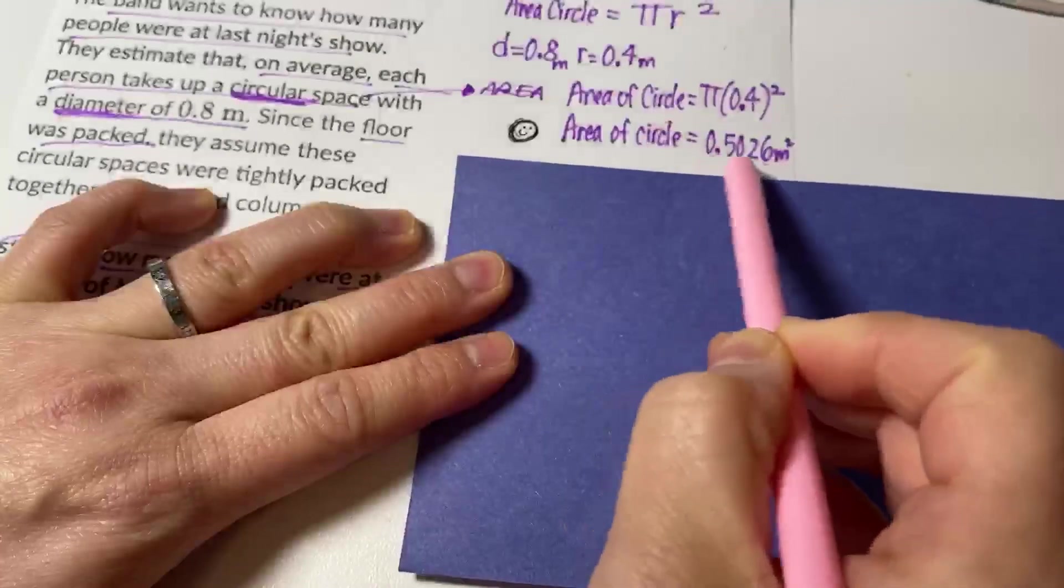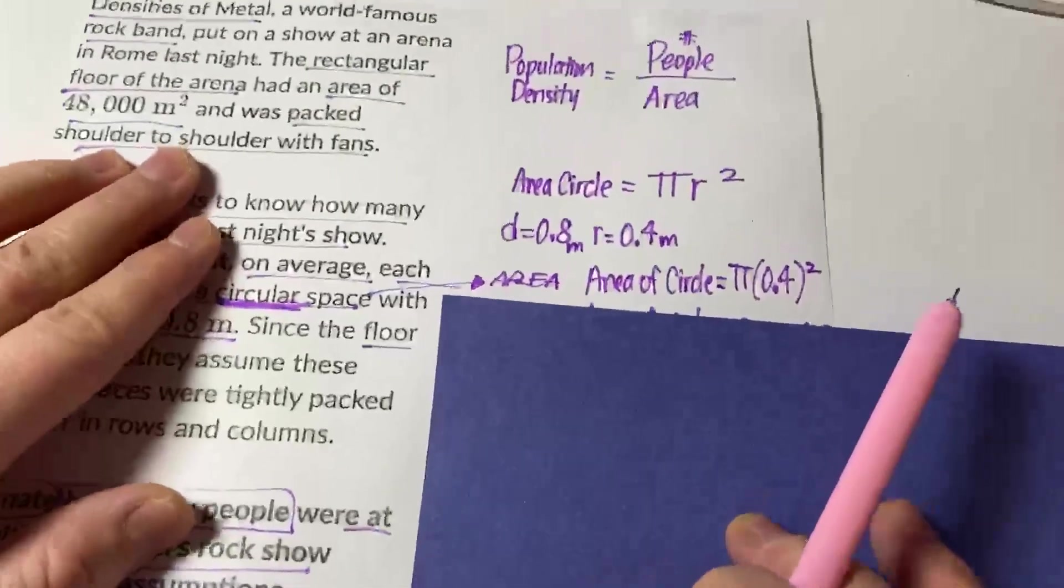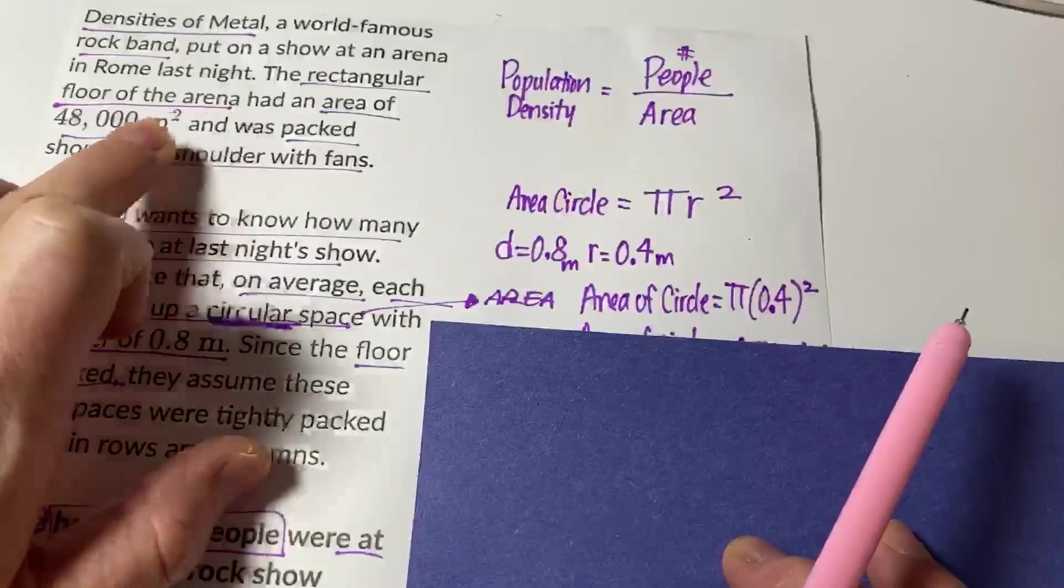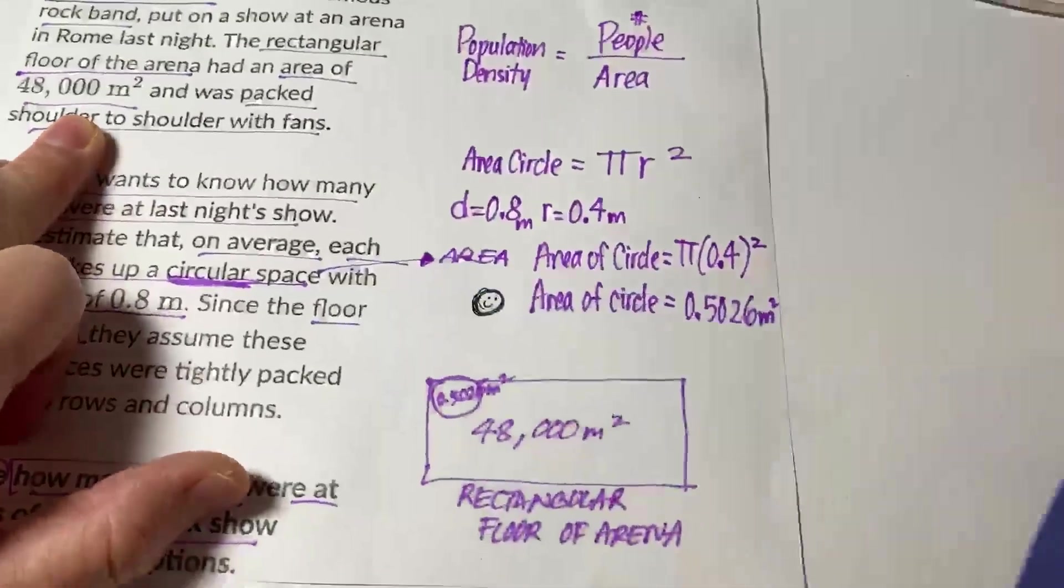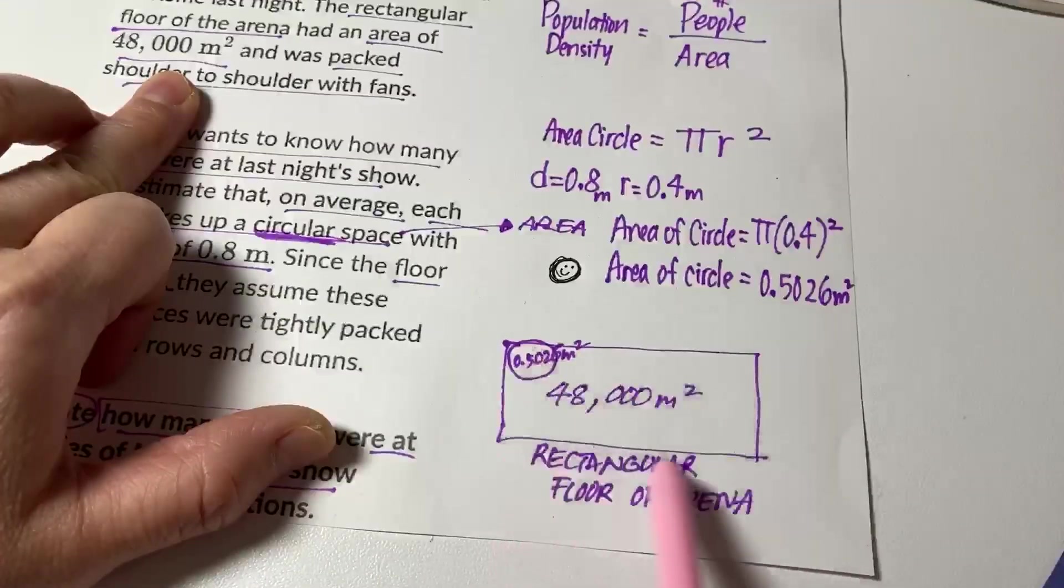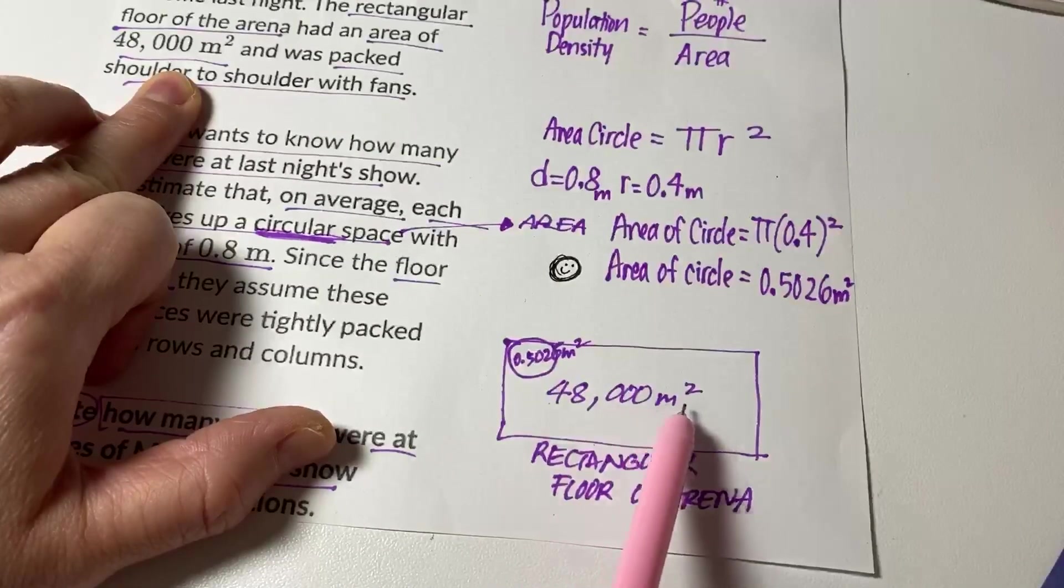So each person takes up this amount of space. Now if you go back to the original top part of the problem, they said the rectangular floor of the arena had this space. So I drew a rectangle. This is the rectangular floor of the arena, and they said it was 48,000 square meters.